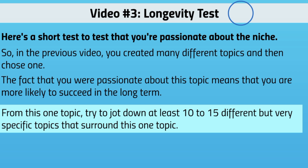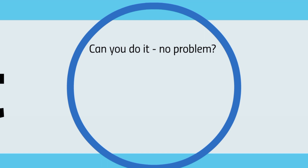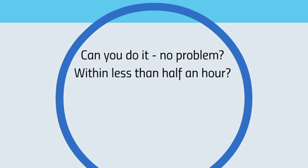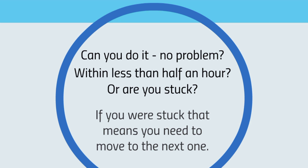Go ahead and do that now — pause if you need to. If you got 10, great; 15, super; 20, awesome. If you got at least 10 within half an hour, that's a good sign your brain can produce topics readily and you're genuinely passionate. If you're stuck and can't think of anything, that means you need to move on to the next niche from your list and go through the cycle again.